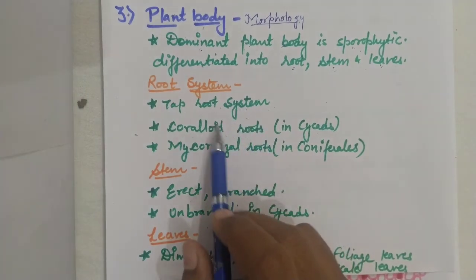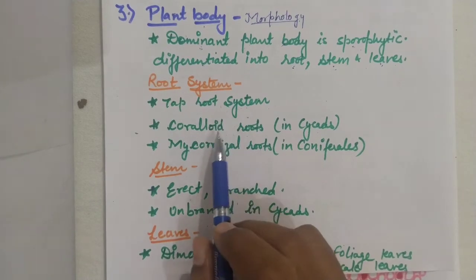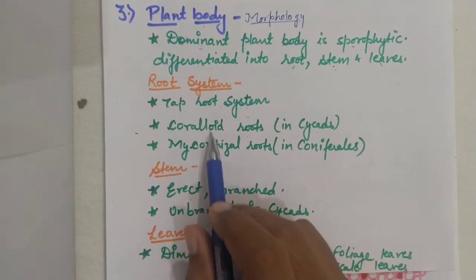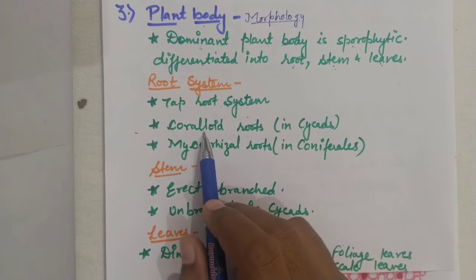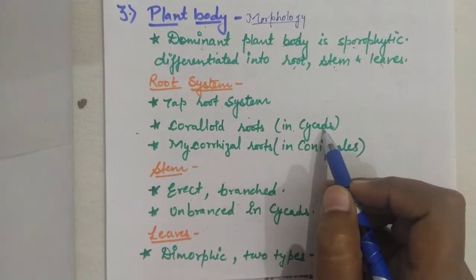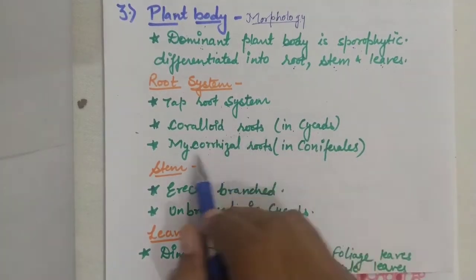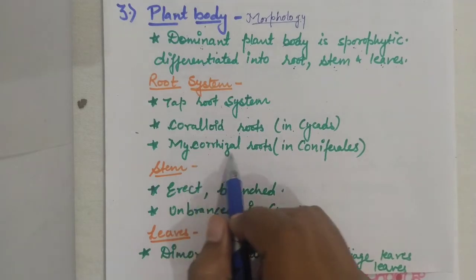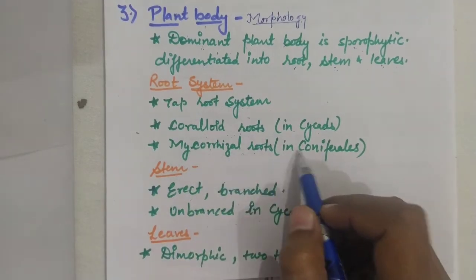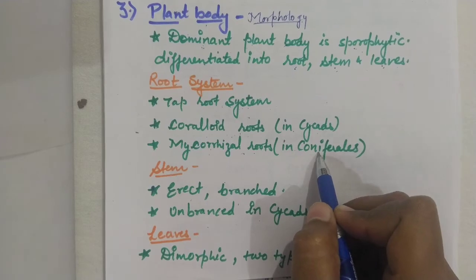Other than the tap root system, there are other types of roots found in some groups. Coralloid roots are found in cycads, and mycorrhizal roots are found in the order Coniferales.